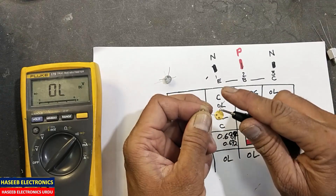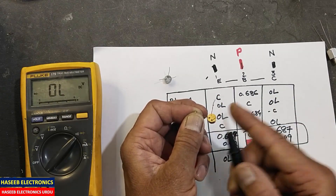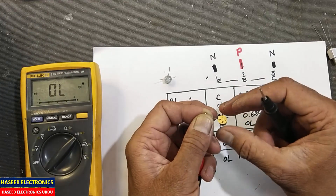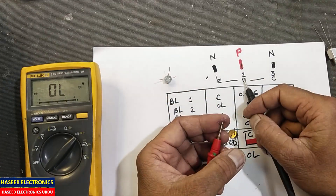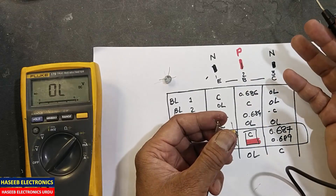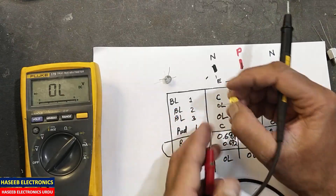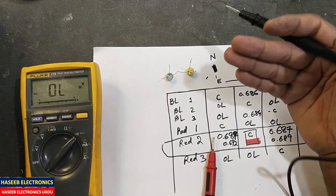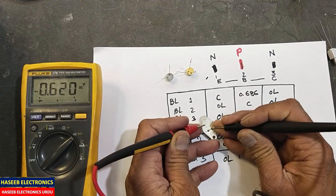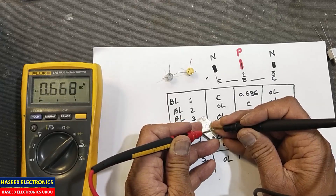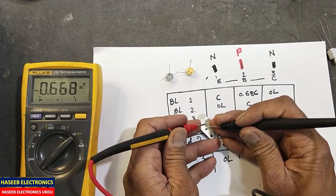Repeating the test steps on the faulty transistor: one side reads open, the other gives 0.570V — base to emitter junction. Reverse the leads: 0.72V. The collector to emitter junction is also damaged. Base to emitter is open. So this transistor is bad. On a good transistor: 0.626V and 0.667V — high resistance base to emitter, low resistance base to collector.